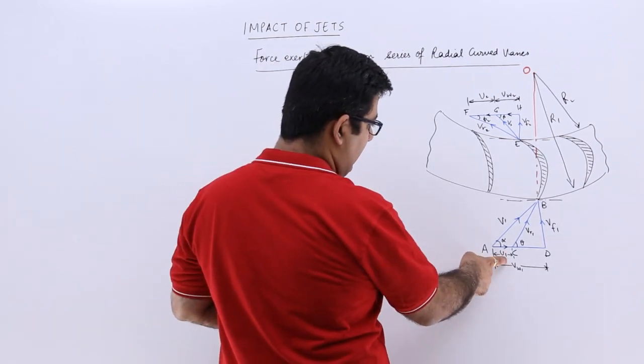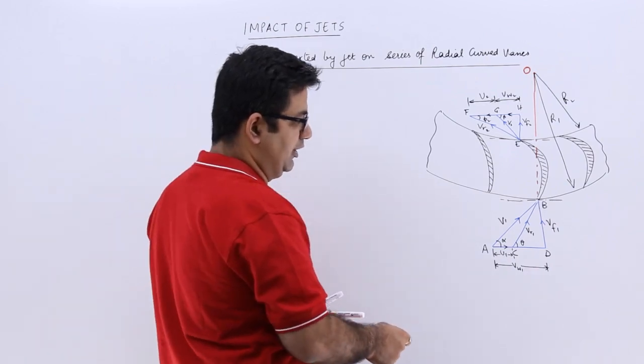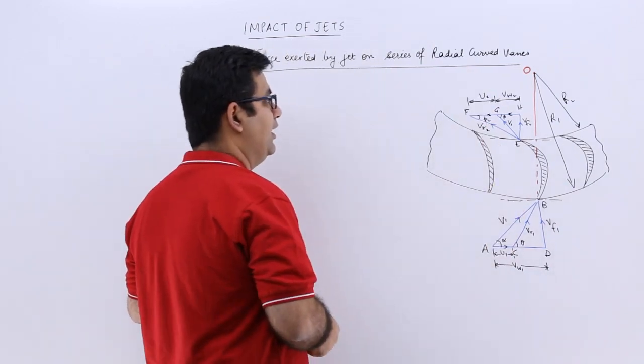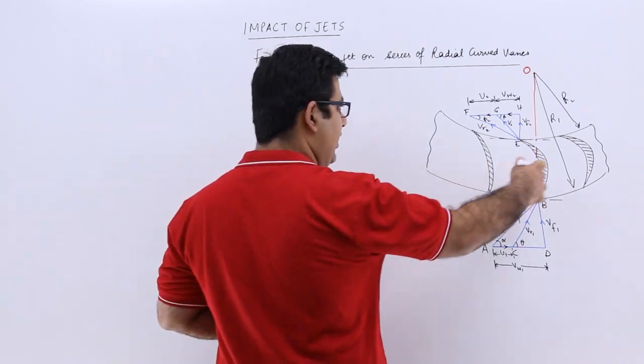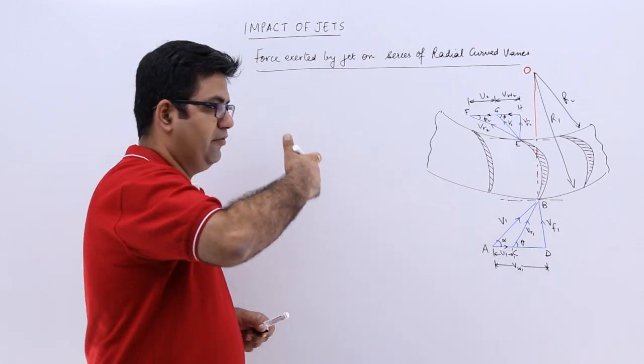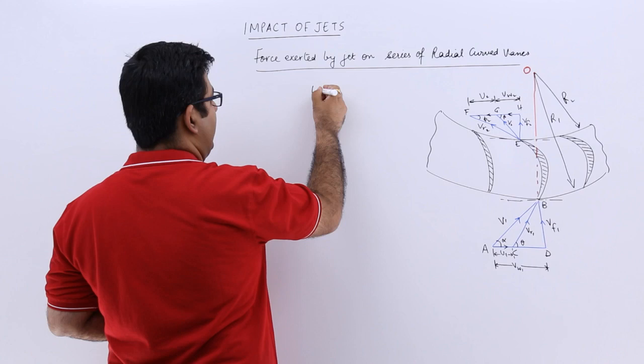If u1 is the tangential velocity at inlet, then you will have u2 as the tangential velocity at outlet. You can say that if this entire wheel on which these curved vanes are arranged is moving with the angular velocity of omega.